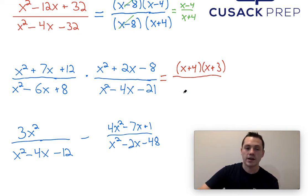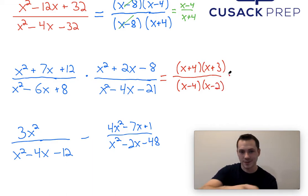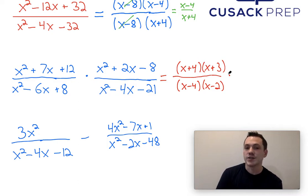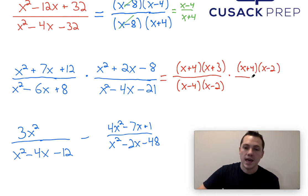And on the bottom part here, two numbers that multiply to 8 but add to negative 6 would be (x - 4)(x - 2). On the right part of this equation, I'm just going to factor again. I need two numbers that multiply to negative 8 but add to 2, so I'm going to have (x + 4)(x - 2). And for the bottom right part here, two numbers that multiply to negative 21 but add to negative 4, we're going to have (x - 7)(x + 3).